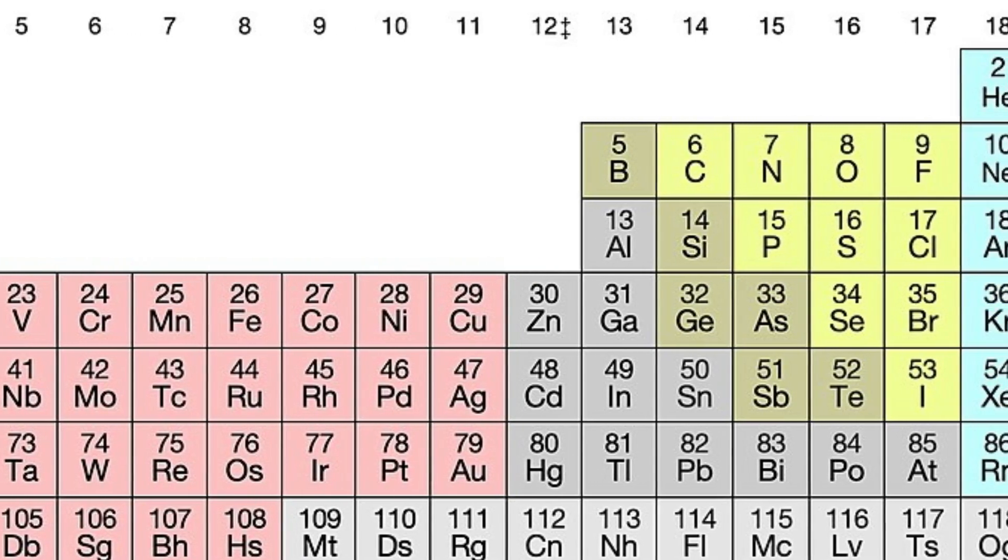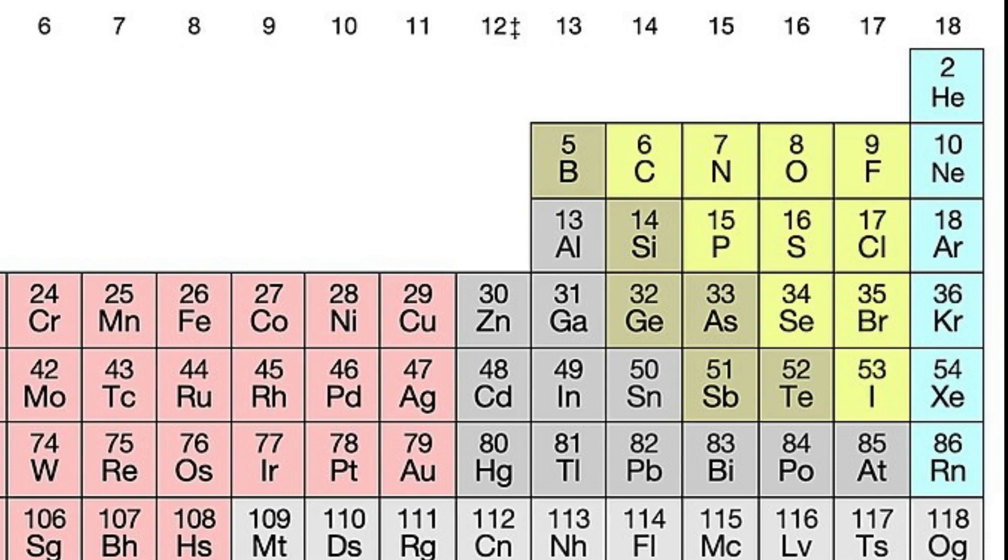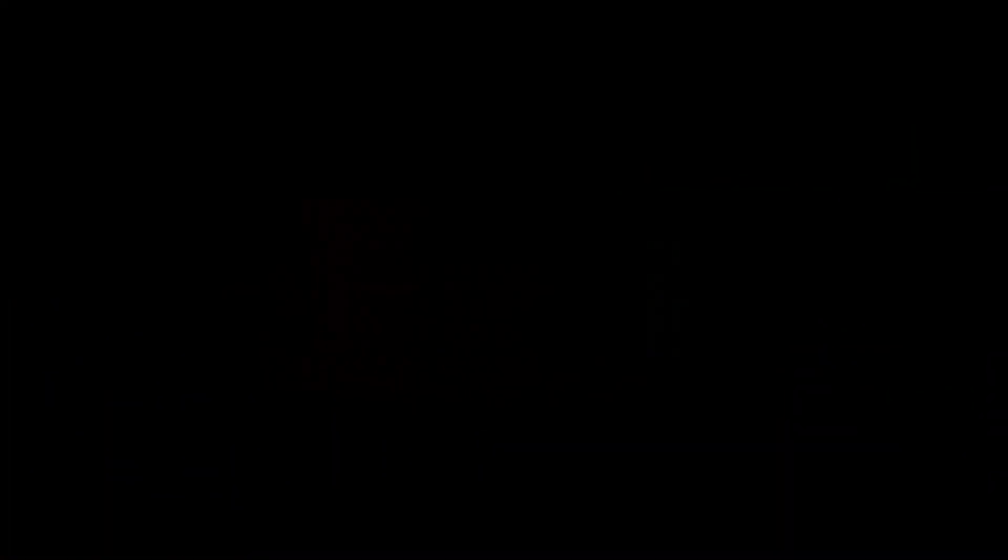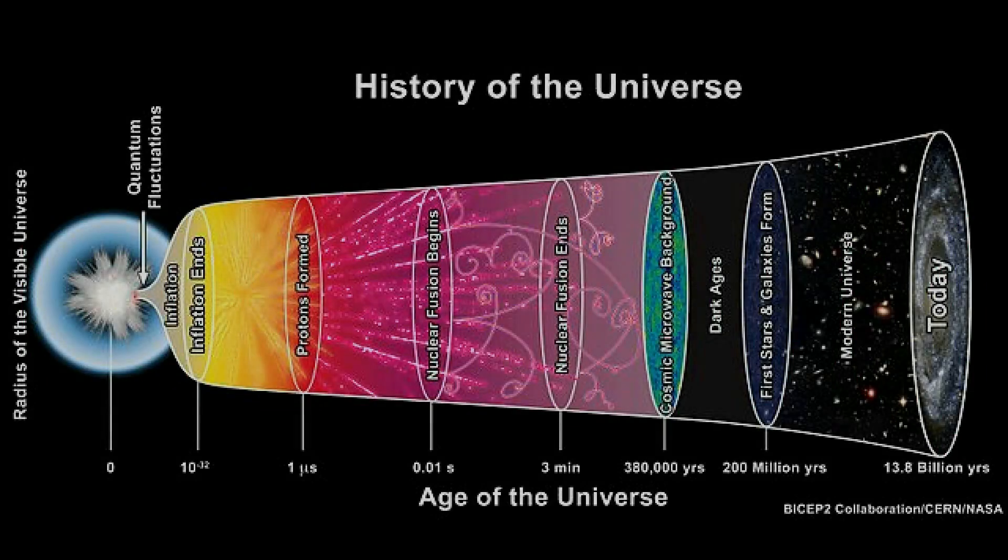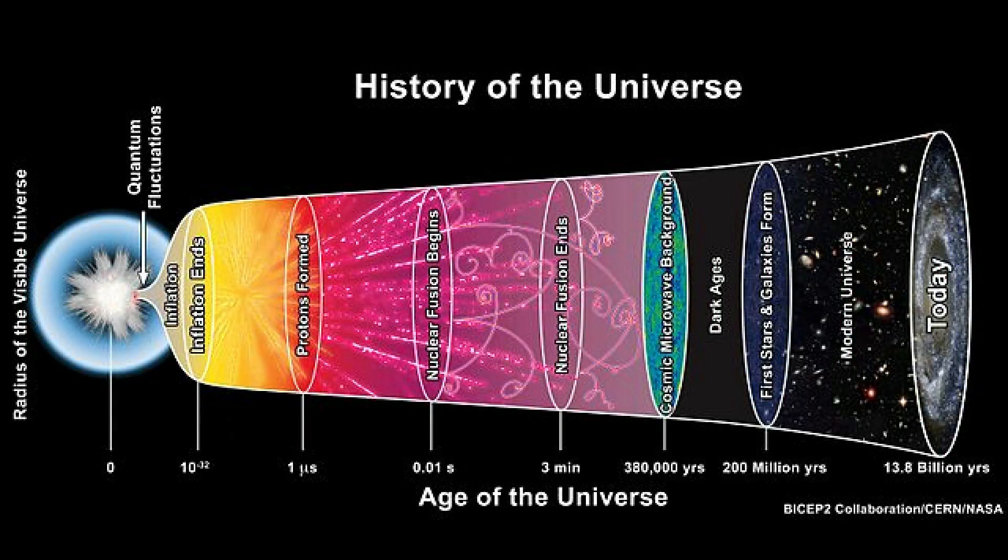The strong force must not be too strong. Had alpha sub s been 3.7% stronger, fusion would be too easy. All hydrogen would have fused into helium in the first minutes after the Big Bang. There would be no water, no organic compounds, nor fuel for stars like our sun.